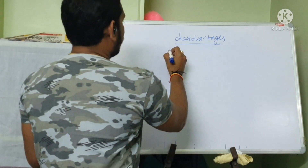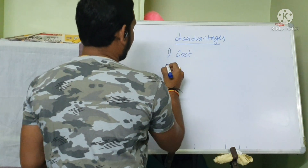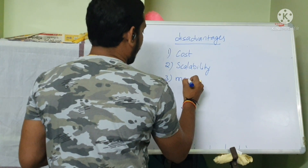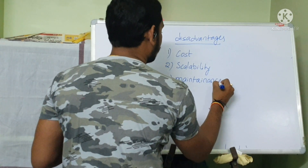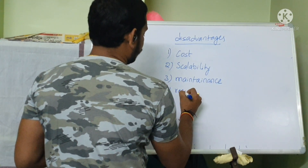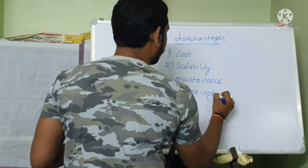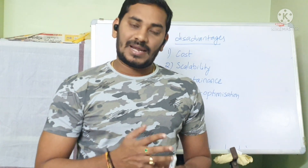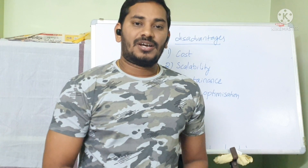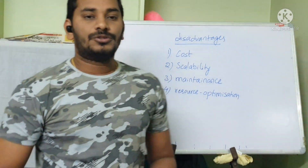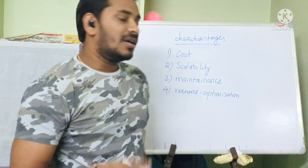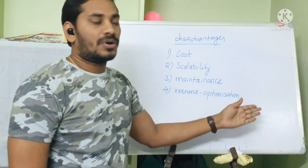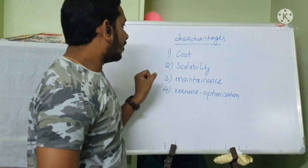The main disadvantages are cost, scalability, maintenance, and resource optimization. From a business perspective, you want low cost, high availability, and easy scaling. With physical servers, as the number of servers grows, costs rise significantly. Scalability is also a problem — if you suddenly get more traffic, it takes at least a week to purchase, set up, and configure a new server.